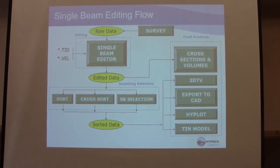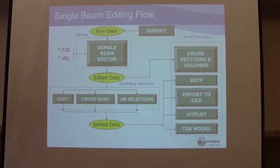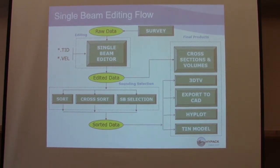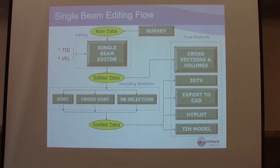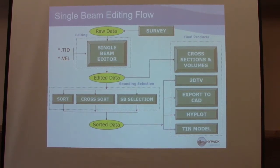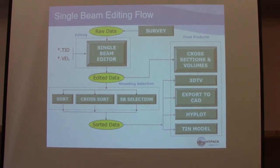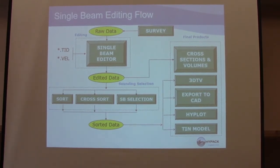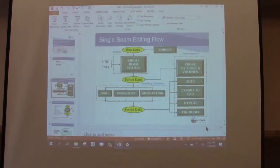In the back of the HiPAC help manual is the raw file format. There's a header that tells us about your boat, your offsets, and what sensors you were using. After that is just a bunch of data. Let's look inside one of these files.